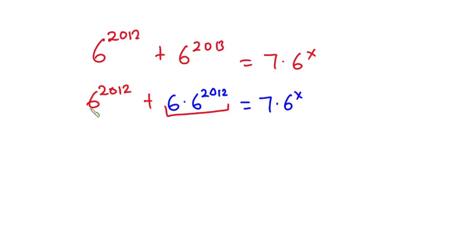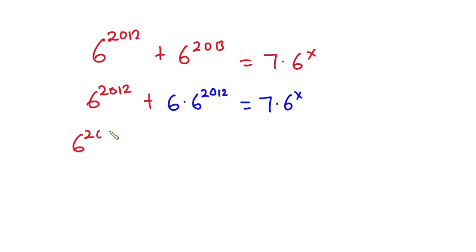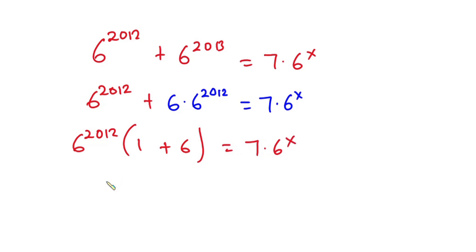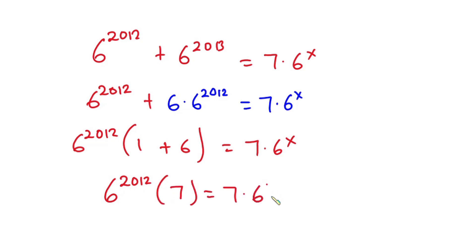The reason I did this is that I wanted to produce a common factor so that I can factorize. Since that aim has been accomplished, I'm going to factor 6 to the power 2012 out. So we have 6 to the power 2012 times (1 plus 6), which is equal to 7 times 6 to the power x. Simplifying, we have 6 to the power 2012 times 7 equals 7 times 6 to the power x.